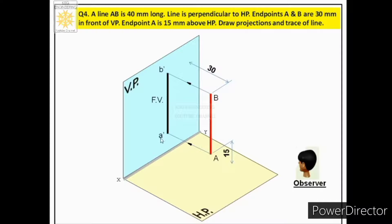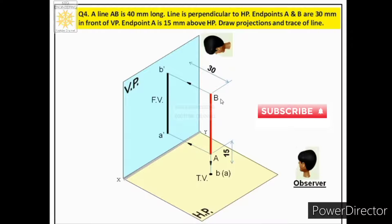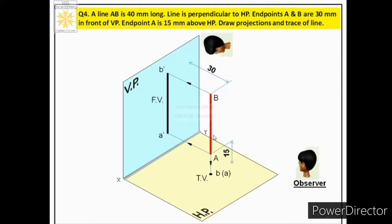We denote the front view of a line by small letters a' b'. Next, we draw the top view. When the observer looks at the line from the top, only a point is visible. We project both endpoints onto the horizontal plane and get a single point as the top view. Since endpoint B is seen first from the top, we write B outside and A inside the bracket, indicating A is below B.